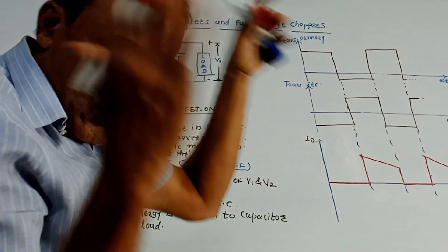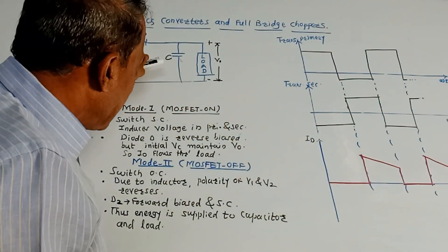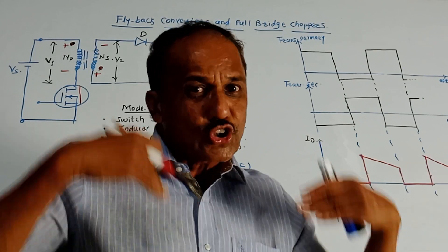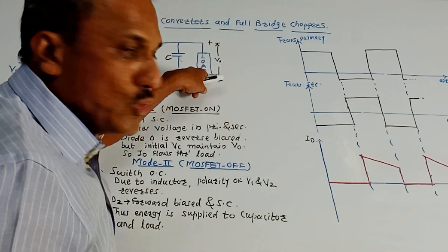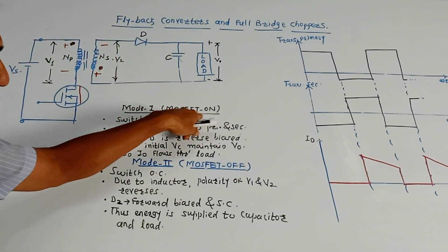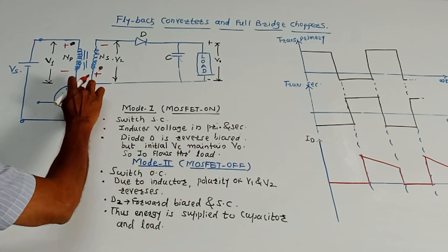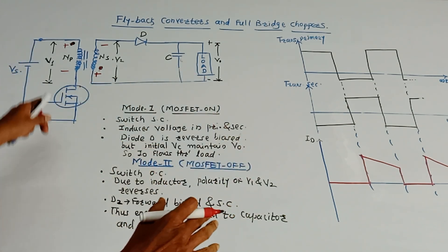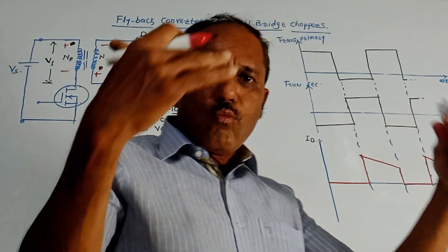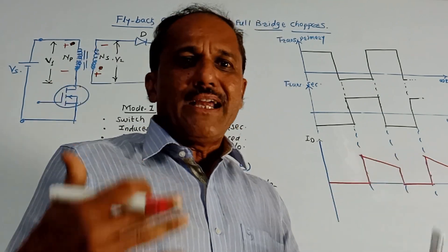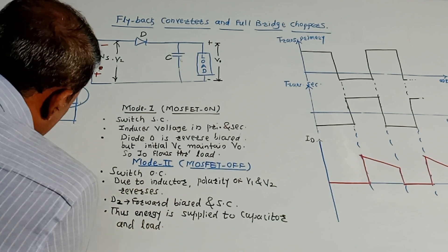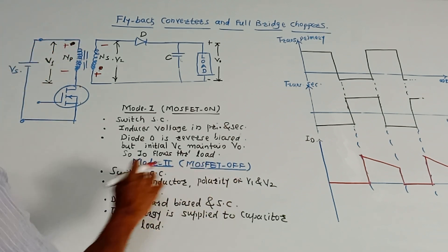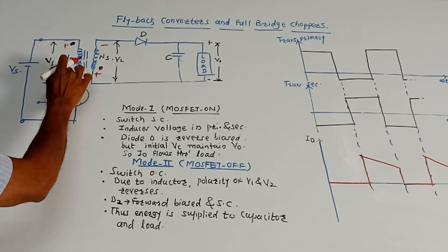Since the diode is reverse biased, it acts as an open circuit. The capacitor, which has a large value and had previously stored energy, delivers that stored energy to the load during Mode 1. In Mode 2, the MOSFET is switched off and acts as an open switch. Due to the inductor's energy storage property, the polarities of V1 and V2 are reversed — positive becomes negative and vice versa.